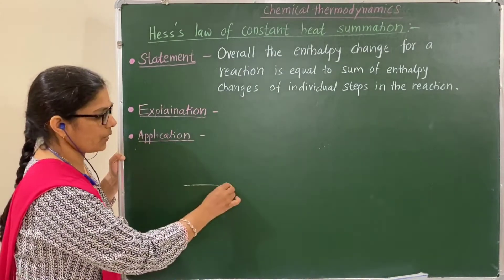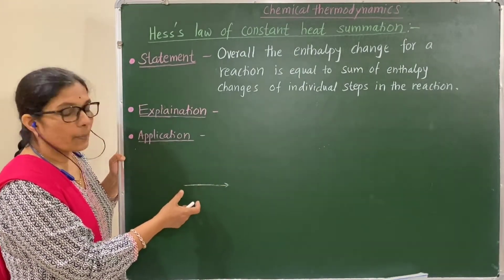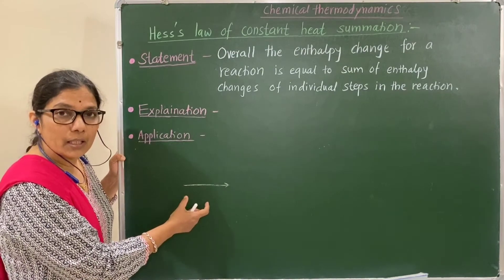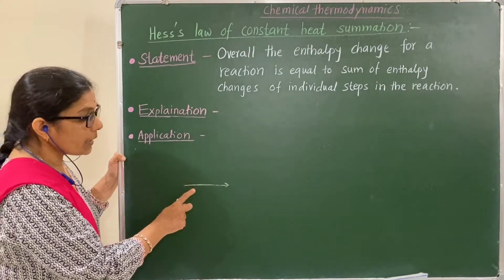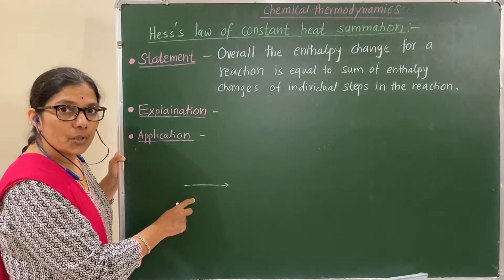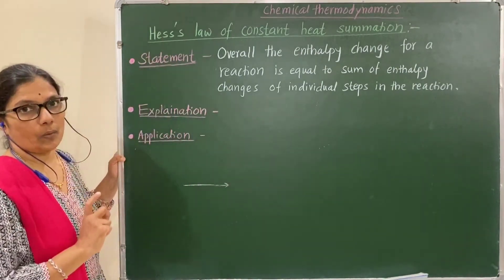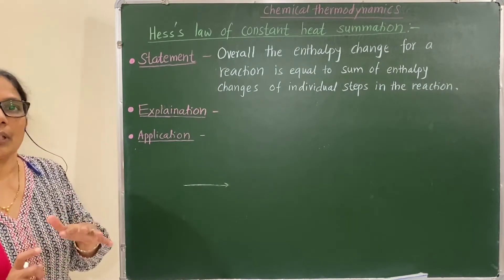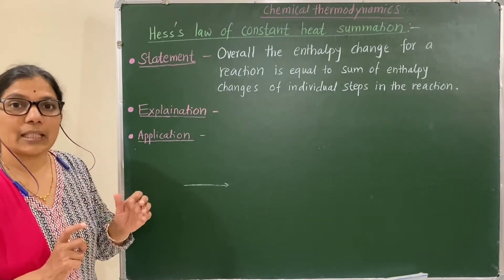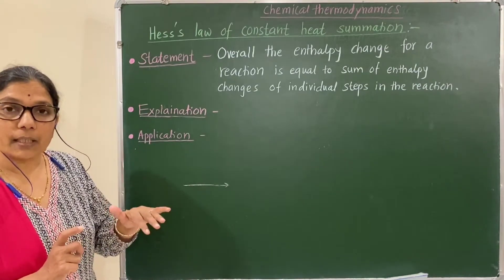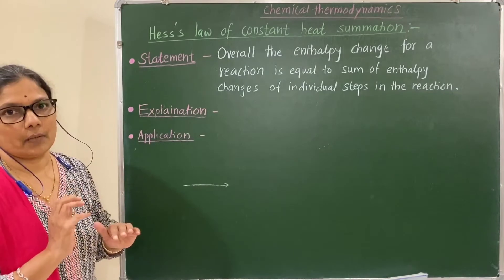If it is not possible to determine the enthalpy change of a reaction experimentally, then you can determine it with the help of Hess's Law. This is because thermochemical equations can be added, subtracted, divided, or multiplied just like algebraic equations.